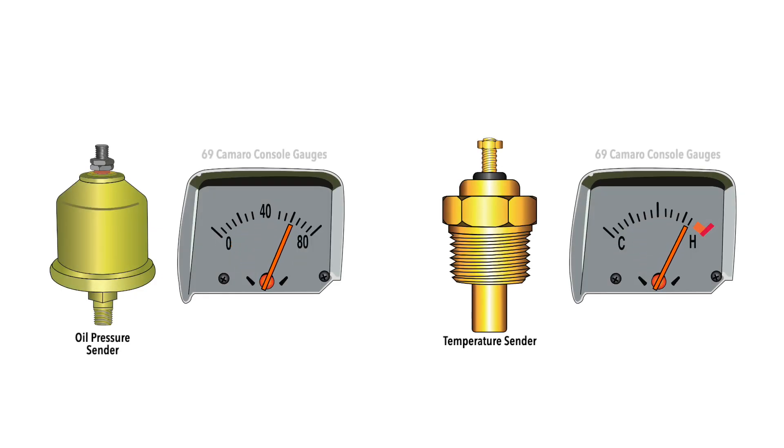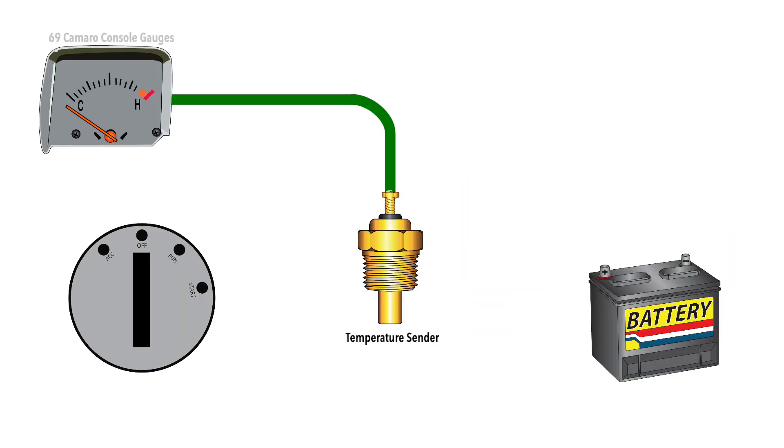As temperature or pressure increase, the sending unit resistance decreases. This reading is carried through the signal wire to the gauge inside the car where it is displayed as a number.